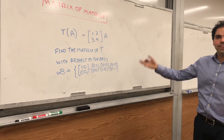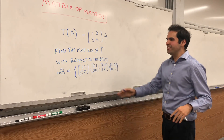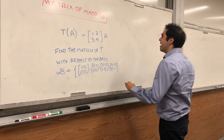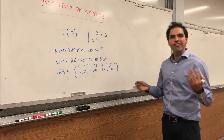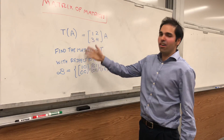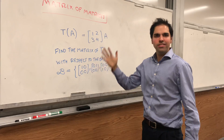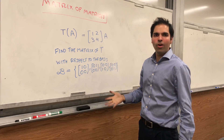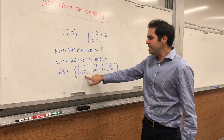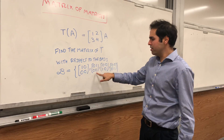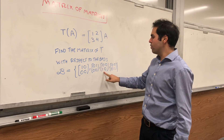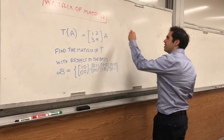Notice that we can write all 2×2 matrices in terms of those building blocks, so that's good. How would we find the matrix of a linear transformation? We calculate T of each basis element: T([1,0,0,0]), T([0,1,0,0]), T([0,0,1,0]), and T([0,0,0,1]).